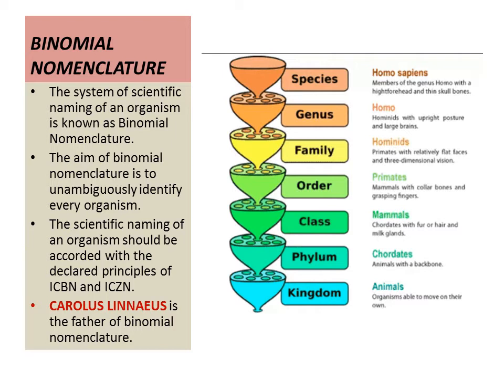The taxonomic rank of a human being is: Kingdom, Phylum, Class, Order, Family, Genus, Species. Animalia — organisms able to move on their own. Chordata — animals with a backbone. Mammalia — chordates with fur or hair and milk glands. Primates — mammals with collarbones and grasping fingers. Hominids — primates with relatively flat faces and three-dimensional vision. Homo — hominids with upright posture and large brain. Homo sapiens — members of genus Homo with a high forehead and thin skull bones.